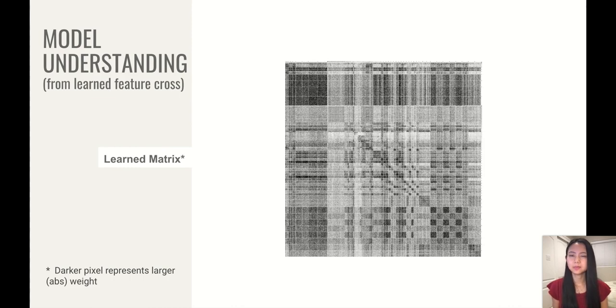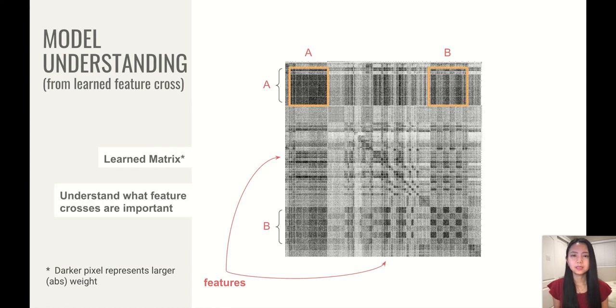And another perspective we wanted to share is that DCN V2 helps us to understand our model better. And the plot here shows one of the learned matrix in the cross layer, where darker pixels represents larger weights. And the columns and rows represents real features. And we see that there are some very clear and interesting patterns that shows us what feature crosses the model consider important. And this is pretty important for many fields, for example, ML fairness.